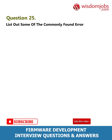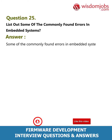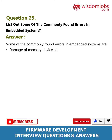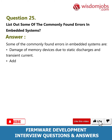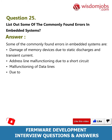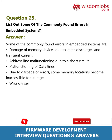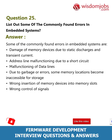Question 25: List out some of the commonly found errors in embedded systems. Answer: Some commonly found errors in embedded systems are: damage of memory devices due to static discharges and transient current, address line malfunctioning due to a short circuit, malfunctioning of data lines due to garbage or errors, some memory locations becoming inaccessible for storage, wrong insertion of memory devices into memory slots, and wrong control of signals.